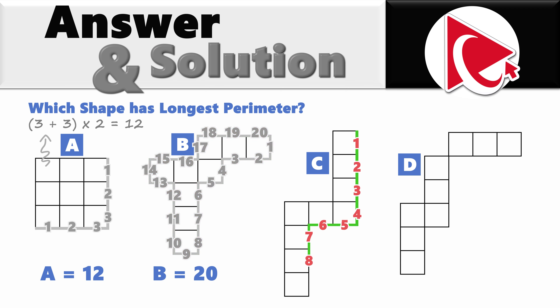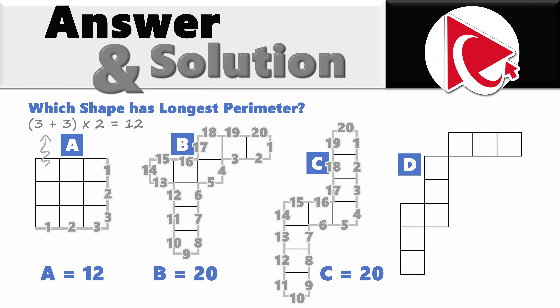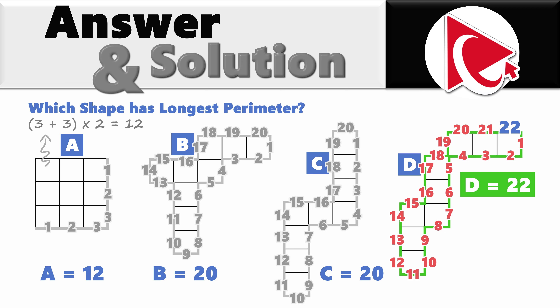Same thing for shape C. Please verify my math, and if I made a mistake, post it in comments. But shape D is different. Let's do the math: one, two, three, four, five, six, seven, eight, nine, ten, eleven, twelve, thirteen, fourteen, fifteen, sixteen, seventeen, twenty, twenty-one, and twenty-two. Which means that shape D has the longest perimeter with 22 units. So the correct answer here is choice D.